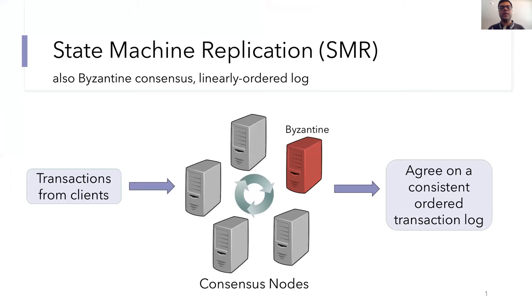First I thought it would be a good idea to briefly recall the state machine replication problem and some of its properties. The system consists of a set of servers or nodes, some of which may be Byzantine. There's clients or users in the system that send transactions to these nodes. The goal for the nodes is to agree on a consistent ordering of these user transactions, so consistent in the sense that all of the honest nodes should output the same ordering. This linearly ordered log of transactions is what we call a blockchain.